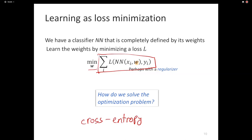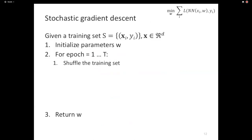One way or another we have set up an optimization problem. How do we solve it? Stochastic gradient descent. It's the only thing we've seen, but also because most popular algorithms today build on top of it.